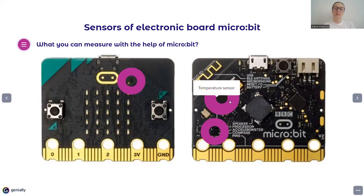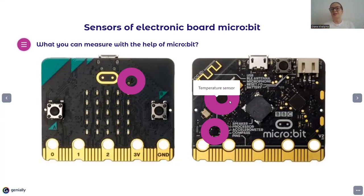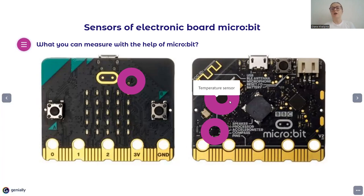There is also a processor on the backside of microbit, and that's how microbit actually gets temperature values. It doesn't have a specific temperature sensor — it takes temperature from the processor. So while microbit is working or when it's just turned on, it has the temperature of its processor, and the more it works, the more the temperature rises. The temperature is not very precise because it doesn't have a precise dedicated sensor, but we can still get an approximate temperature of the air and use it.